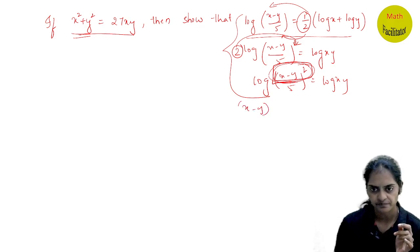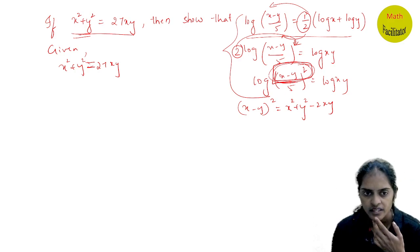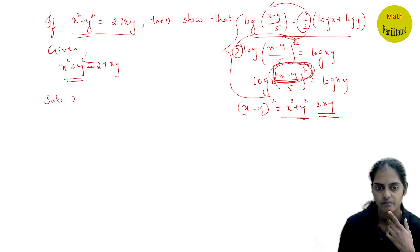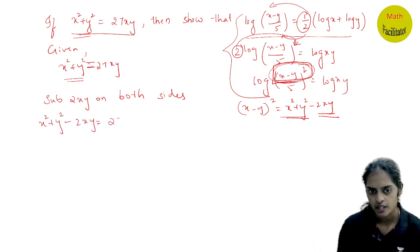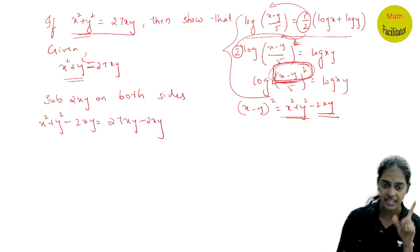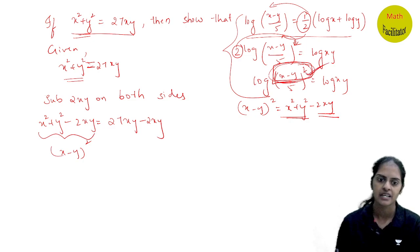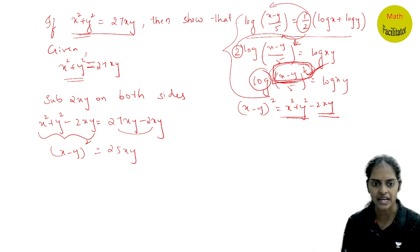What is x minus y whole square? It is x square plus y square minus 2xy. Now see what is given: x square plus y square equals 27xy. These two match. What is missing? Minus 2xy. Because minus 2xy is missing, I am going to subtract 2xy on both sides. So x square plus y square minus 2xy equals 27xy minus 2xy. You understood why I subtracted? There has to be a logic for everything. This is nothing but x minus y whole square equals 25xy. My numerator is ready.